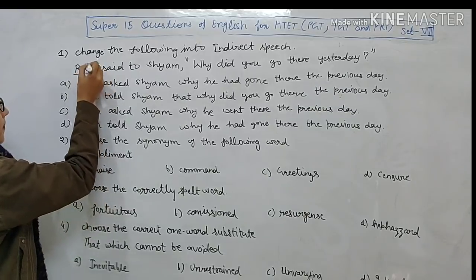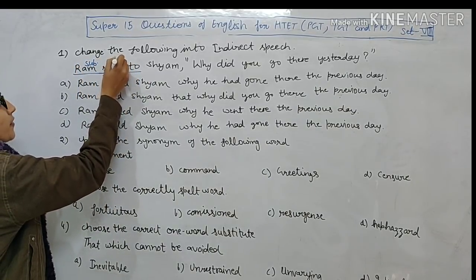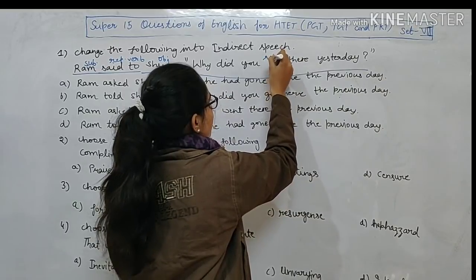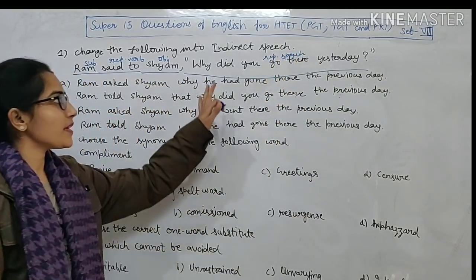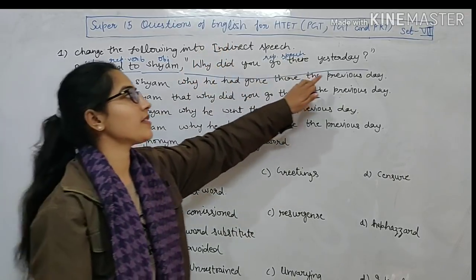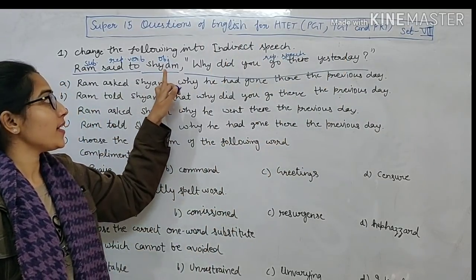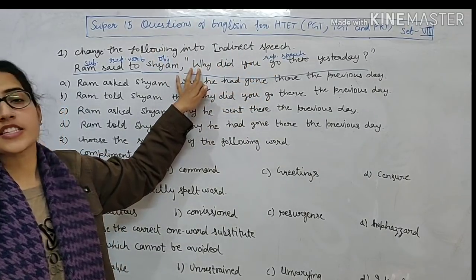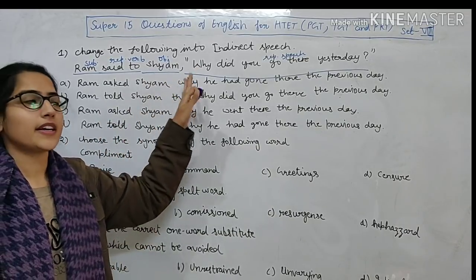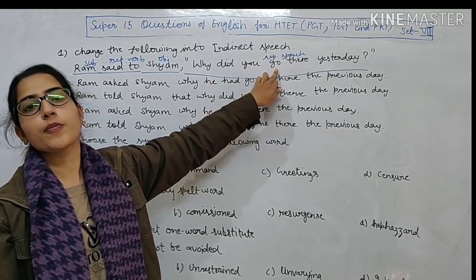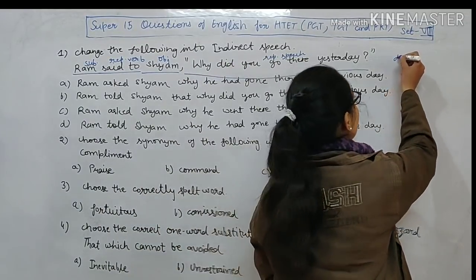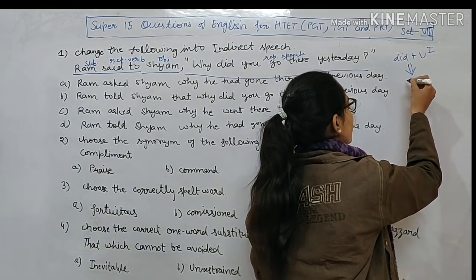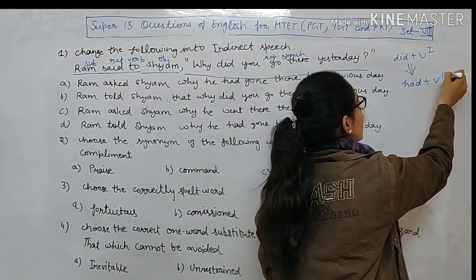In this sentence, Ram is the subject, 'said to' is the reporting verb, Shyam is the object, and the remaining part is the reported speech. The reported speech starts with a question word, so this is an interrogative sentence ending with a question mark. In this case, the reporting verb changes to 'asked', and we connect using the same question word. Since it is past indefinite tense — did + verb first form — in indirect speech it becomes past perfect: had + verb third form.